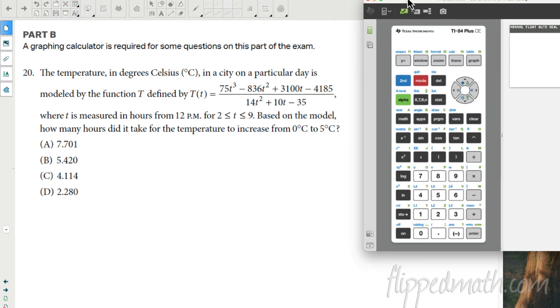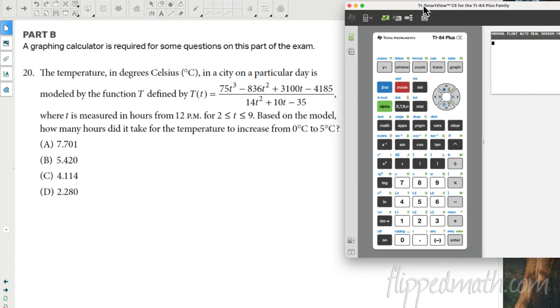All right, here we go, part B. Again, these are coming out of the CED for AP Precalc. Number 20, the temperature in degrees Celsius is given by this function T(t) = -7.52t + .38t^2 + 10t - 35 where t is measured in hours, and they want to know how many hours did it take for the temperature to increase from zero to five. So the first thing we're going to do is we're going to plug this into the calculator.